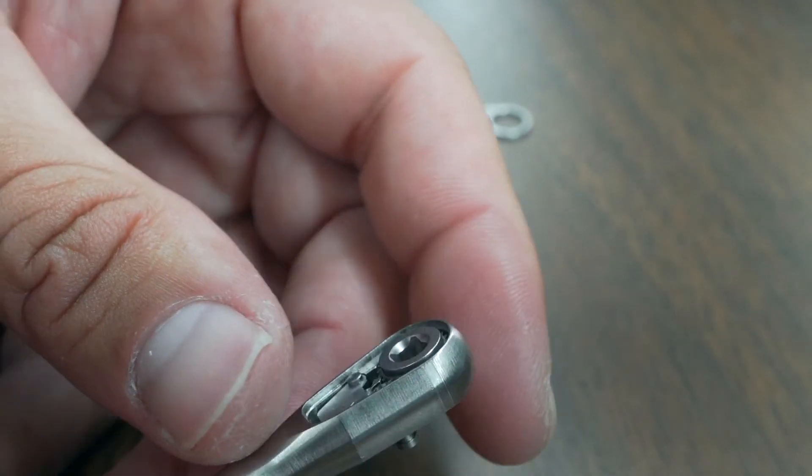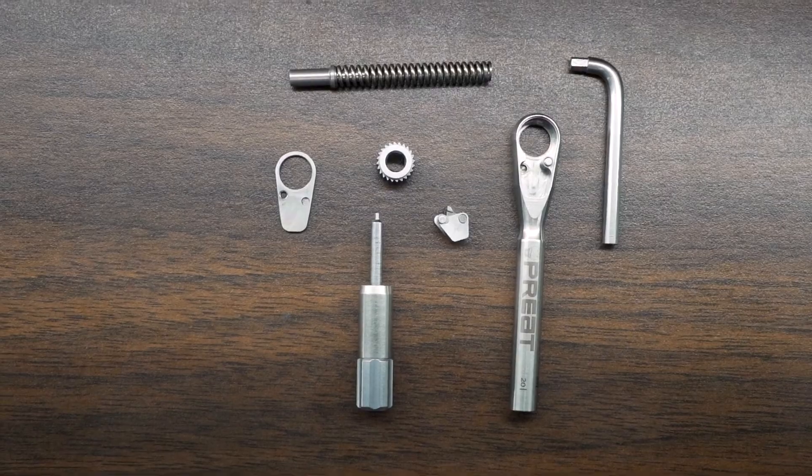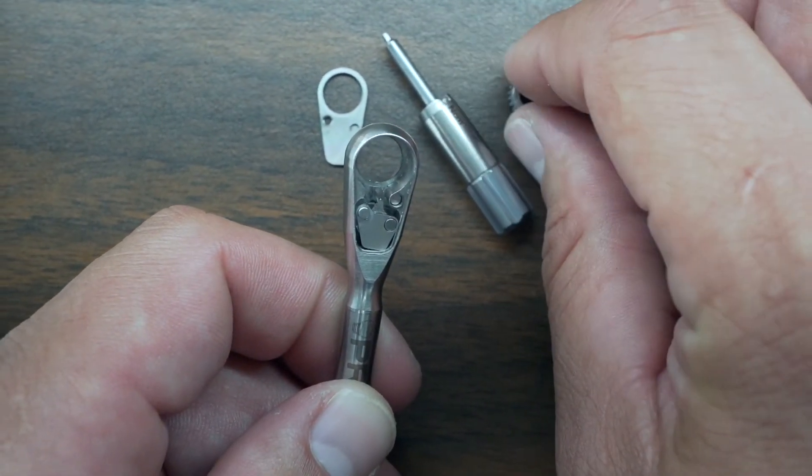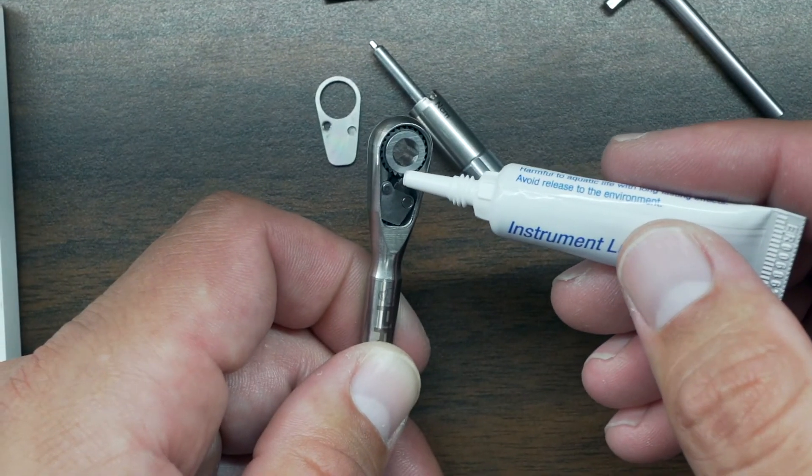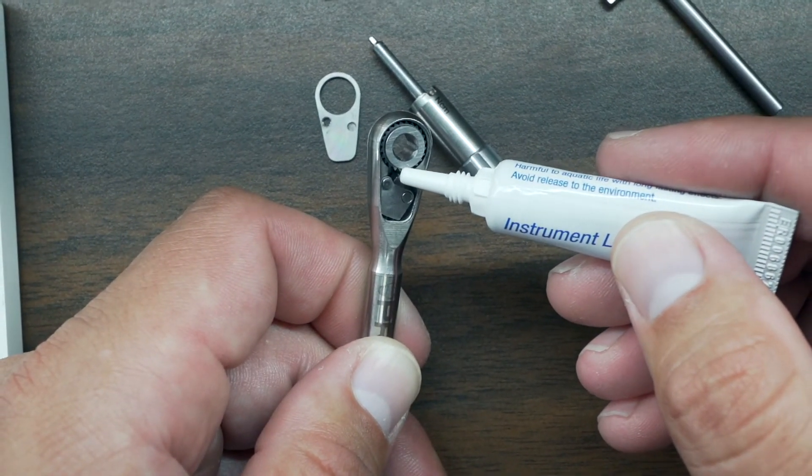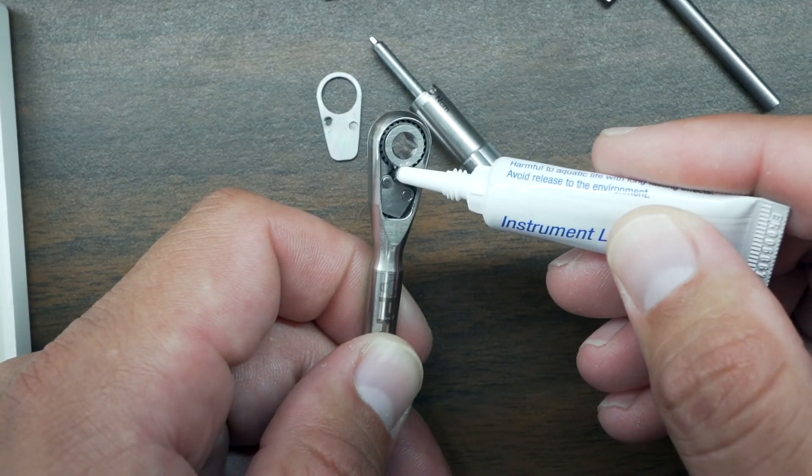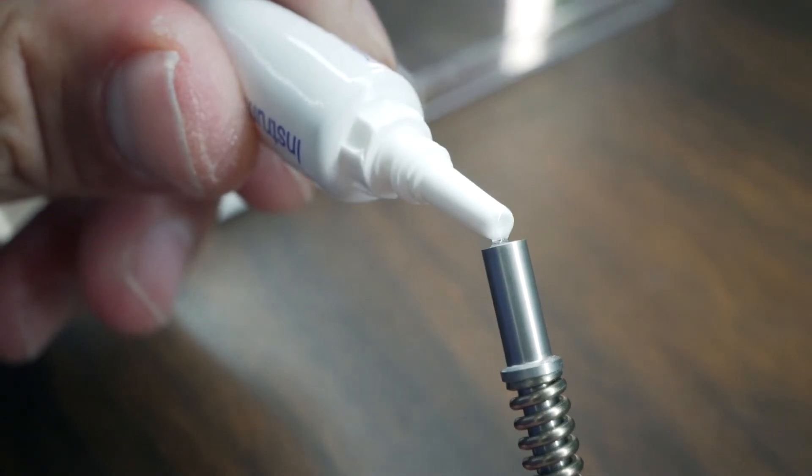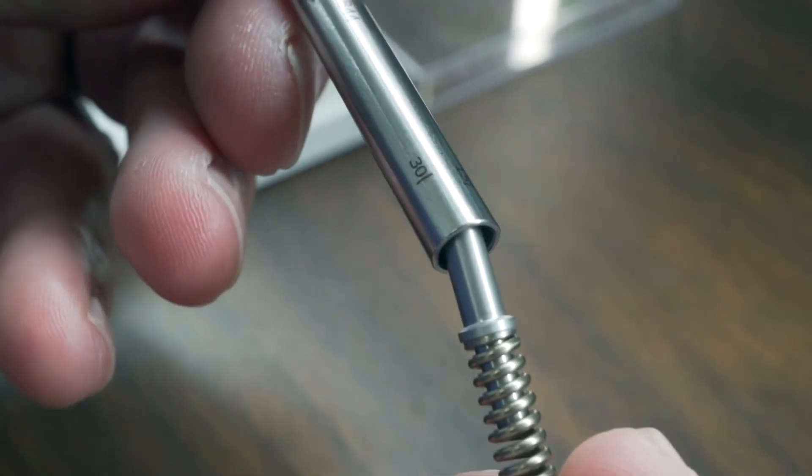After you've disinfected each individual component, you're going to clean each individual component, and as you reassemble the torque wrench you're going to lubricate the torque wrench in two areas. You're going to lubricate the torque wrench where the ratchet wheel contacts the ratchet, as well as when you're going to place the spring back into the tool. You're going to lubricate the very end of the spring.